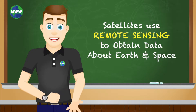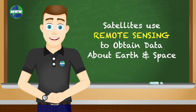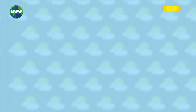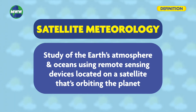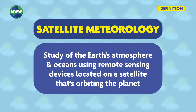Invented in the 1950s, satellites are machines that orbit around the Earth and use remote sensing to obtain data about our planet and space. Satellite meteorology is the study of the Earth's atmosphere and oceans using remote sensing devices located on a satellite that's orbiting the planet.